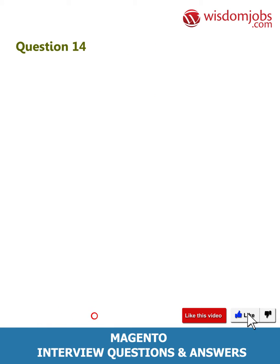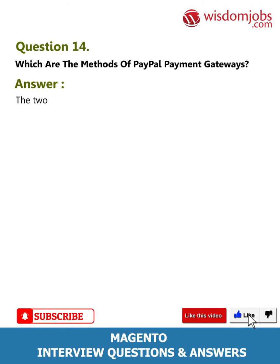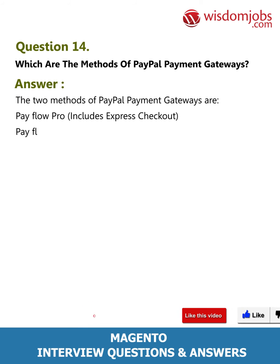Question 14: Which are the methods of PayPal payment gateways? Answer: The two methods of PayPal payment gateways are Payflow Pro, which includes Express Checkout, and Payflow Link, which also includes Express Checkout.